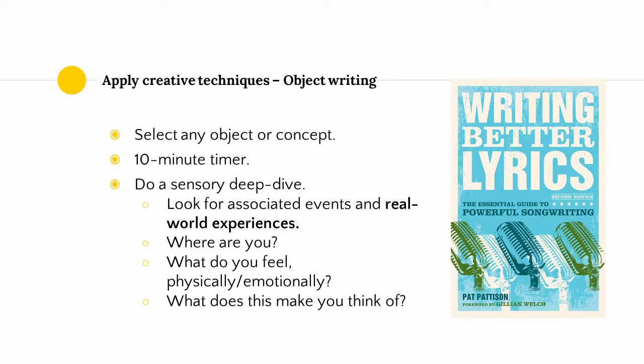Another creative technique that I haven't used much yet but seems to produce good results is object writing, an exercise from Writing Better Lyrics by Pat Patterson. Basically you take a noun — an object or a concept — set a 10-minute timer to avoid brain fatigue, and then do a sensory deep dive. You look for events and real world experiences that you associate with that object or concept, thinking about where you are, what you're sensing physically or emotionally, and what sort of music this makes you think of. You write all of this down over that 10-minute timer.